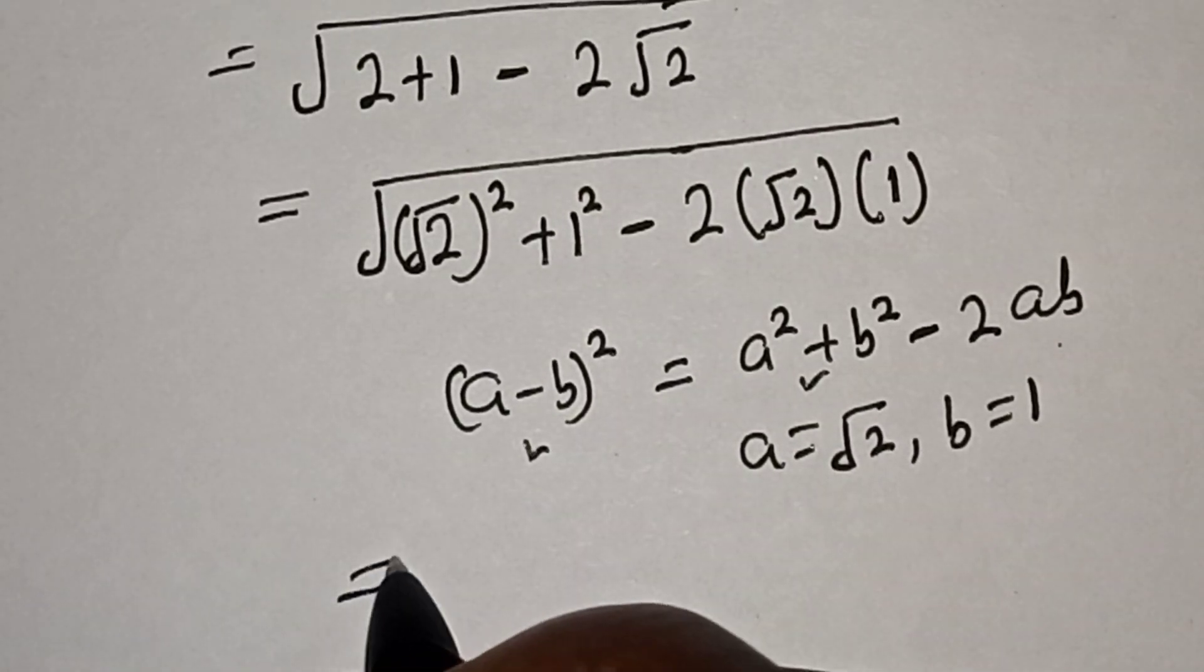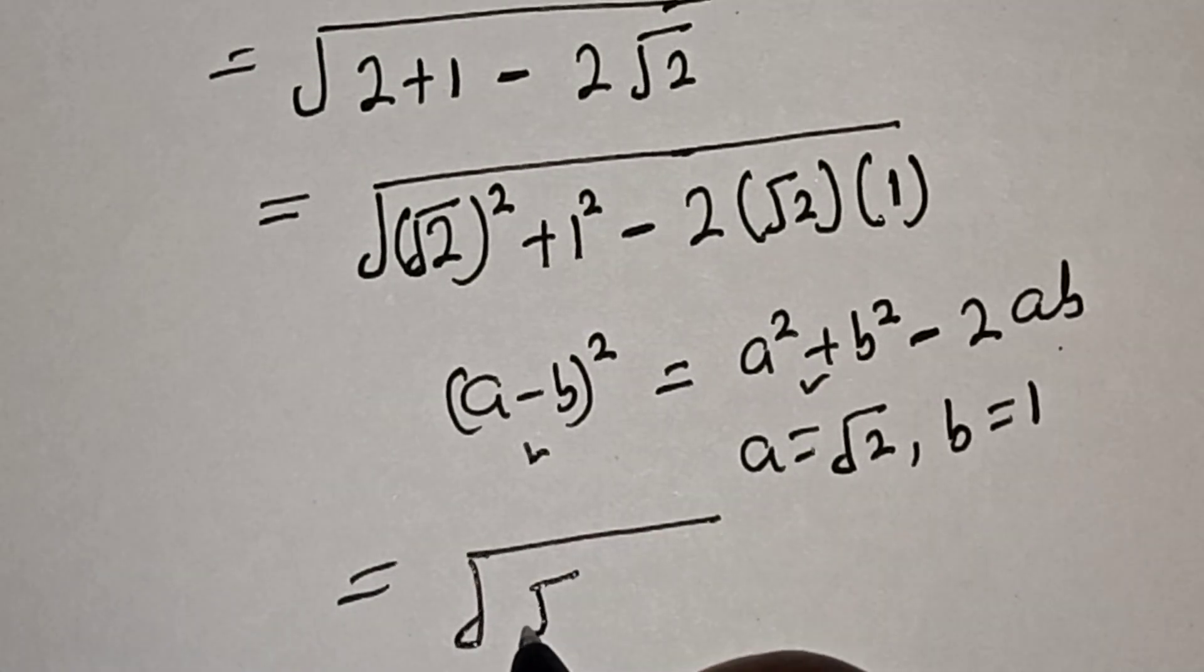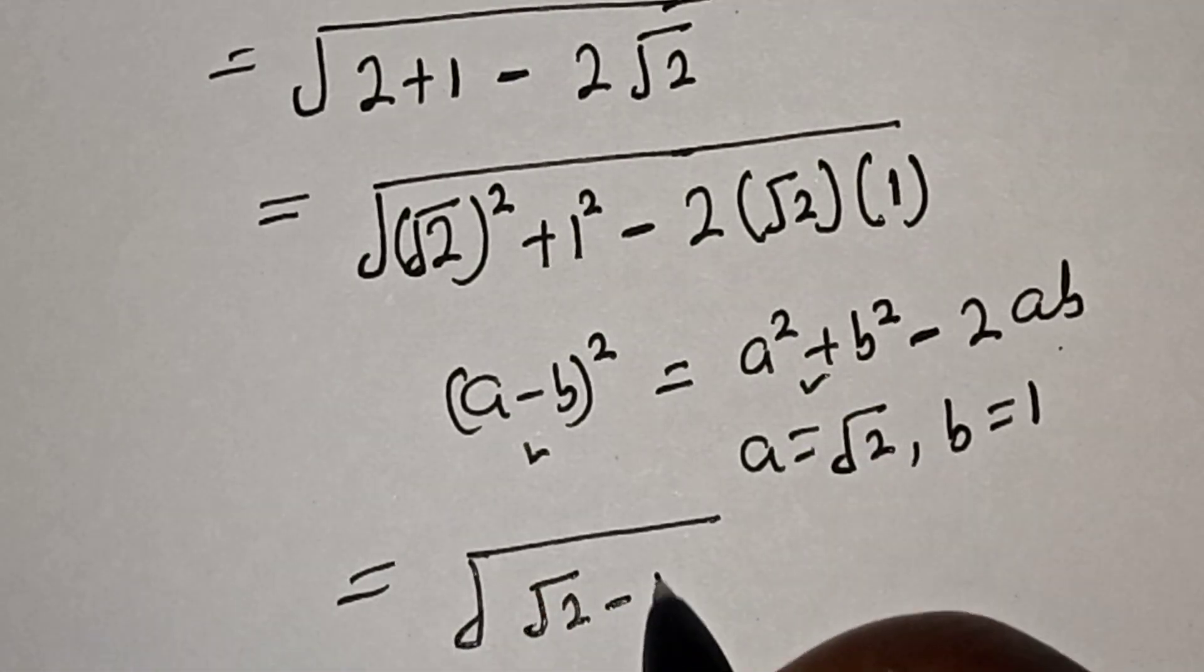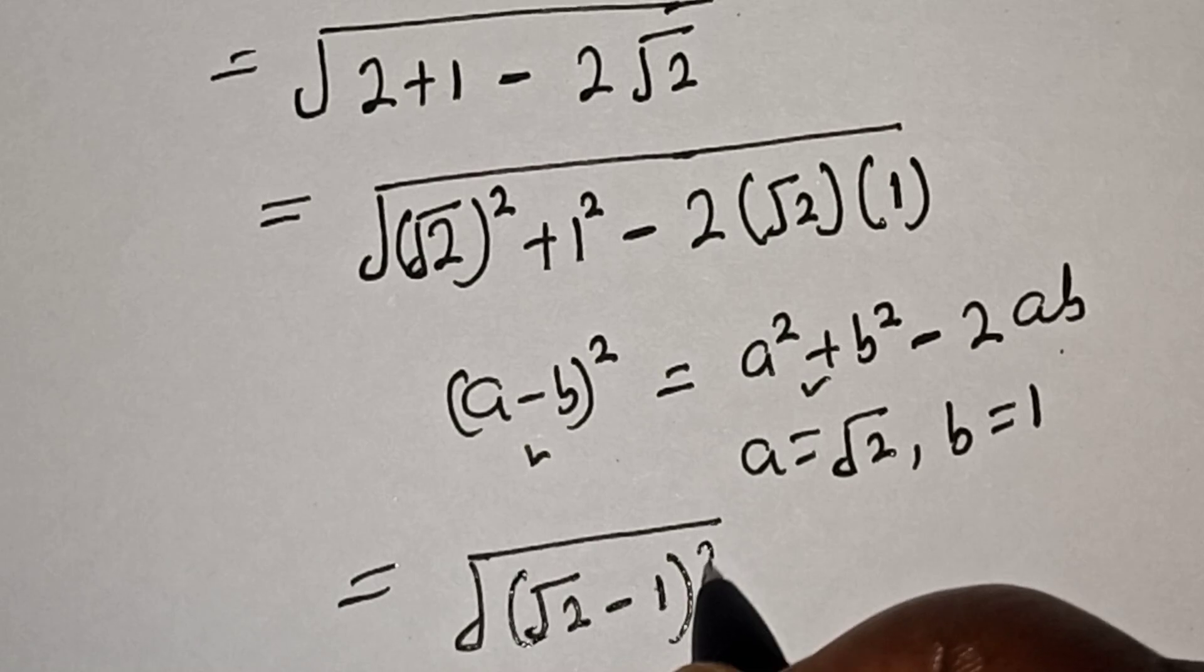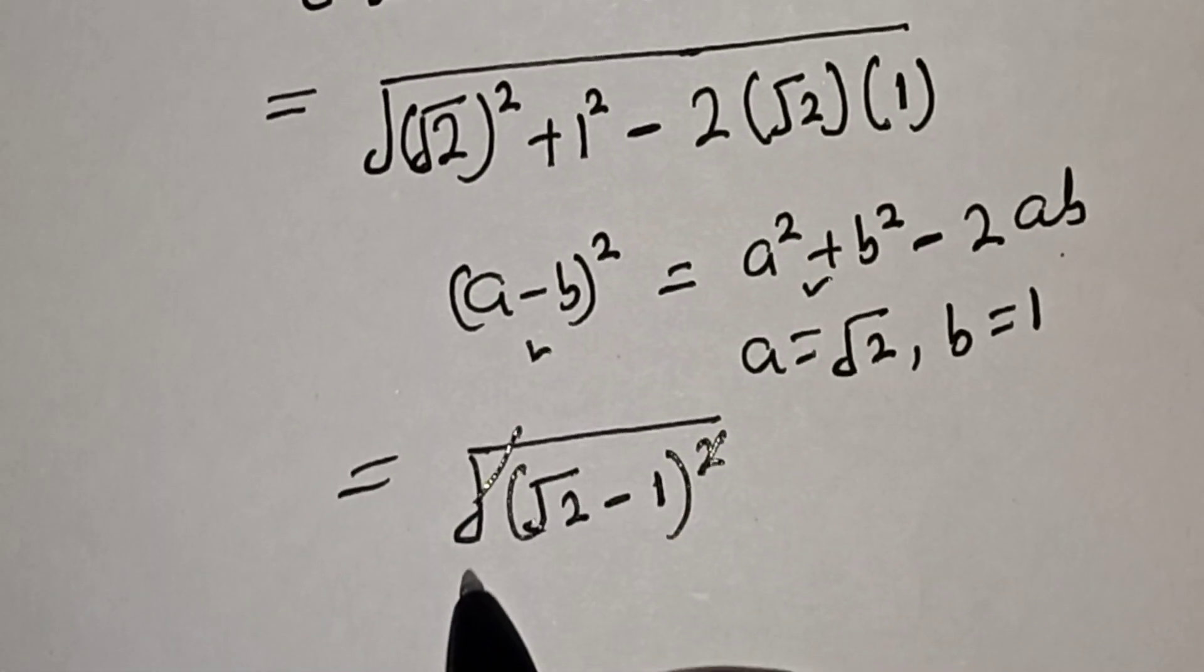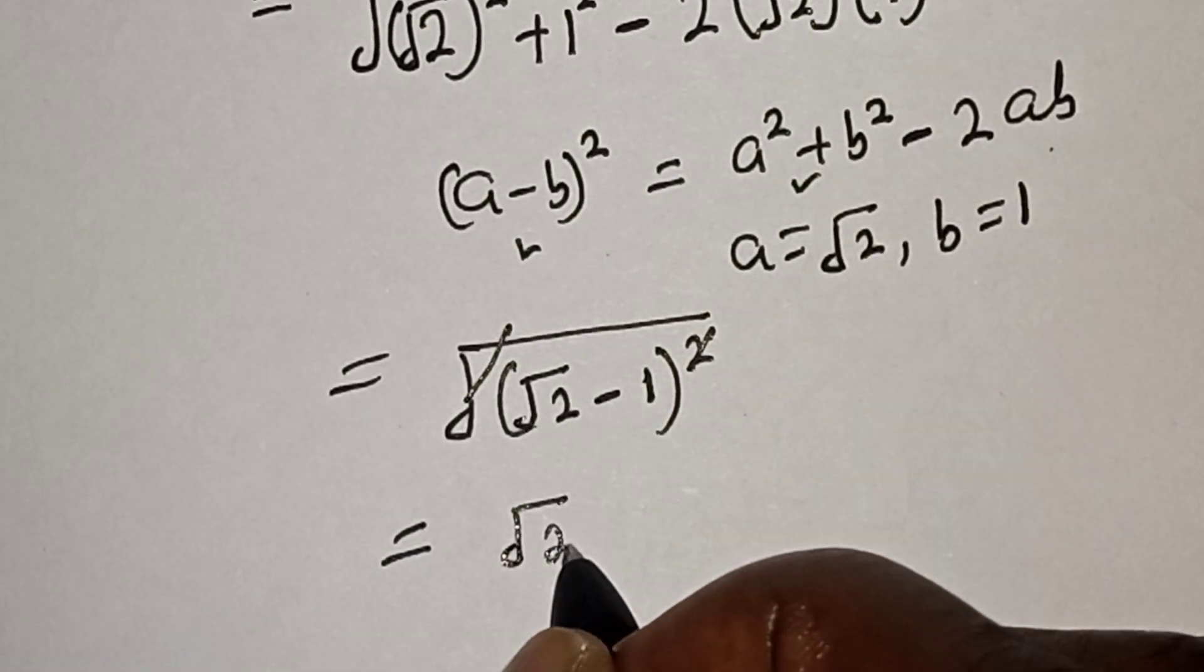This becomes square root of (√2 minus 1)². The square root and square cancel, giving us √2 minus 1.